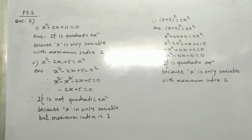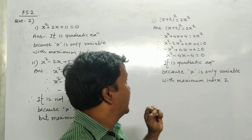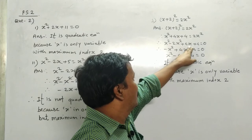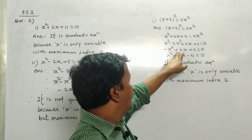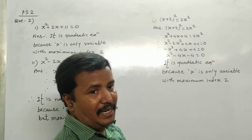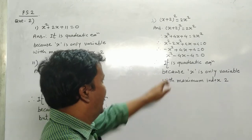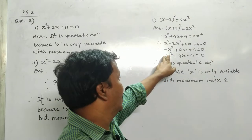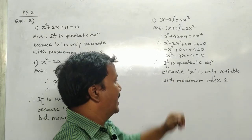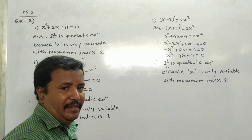Third equation: (x + 2)² = 2x². Expanding using the (A+B)² formula: x² + 4x + 4 = 2x², which gives x² - 4x - 4 = 0 after rearranging (multiplying through by -1). This is a quadratic equation because x is the only variable with maximum index 2.